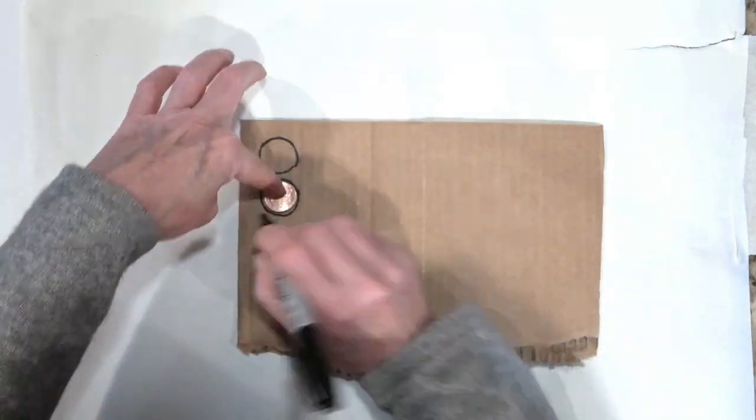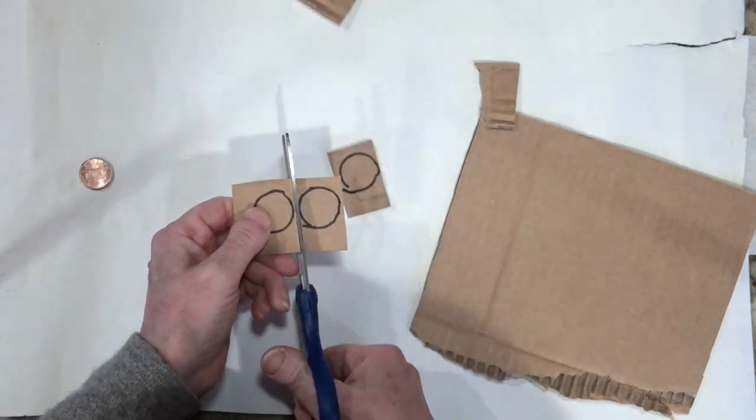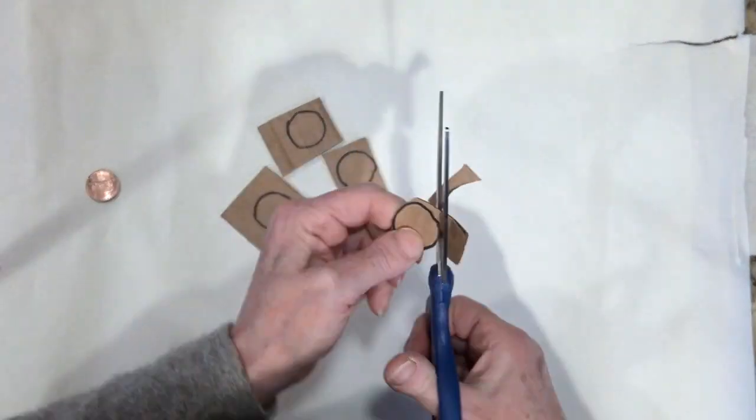Next, use your marker to trace a penny to make four cardboard discs that are each just a little bit bigger than a penny.